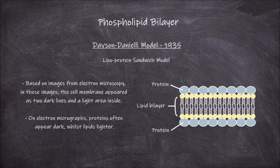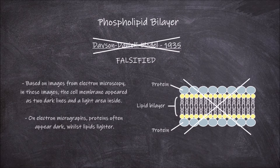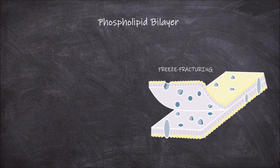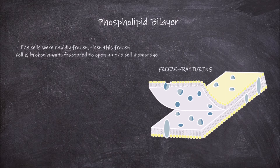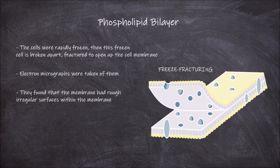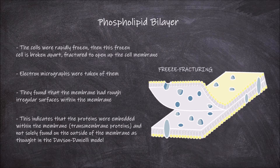The Davson-Danielli model was falsified, as the understanding of the structure of the cell membrane has changed over time because tools and technologies have improved. One technique that helped falsify the Davson-Danielli model was freeze fracturing. Cells were rapidly frozen, then the frozen cell was broken apart — fractured — to open up the cell membrane, and electron micrographs were taken. What was found were rough irregular surfaces within the membrane, indicating that proteins were embedded within the membrane and not solely on the outside as thought in the Davson-Danielli model.